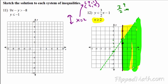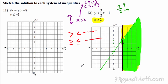In brief: if you have greater than or less than, it's a dotted line. If you have greater than or equal to, or less than or equal to, it's a solid line. If it's greater than or greater than or equal to, you shade on top of the line. If it's less than or less than or equal to, you shade beneath the line.